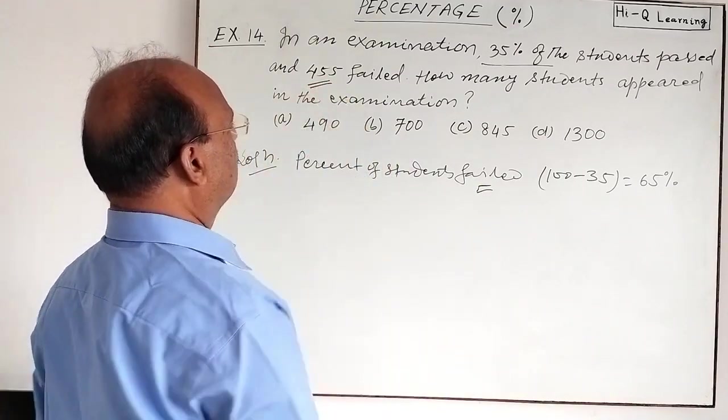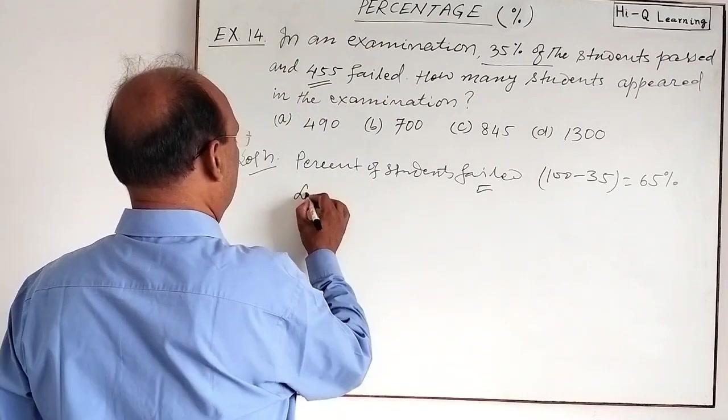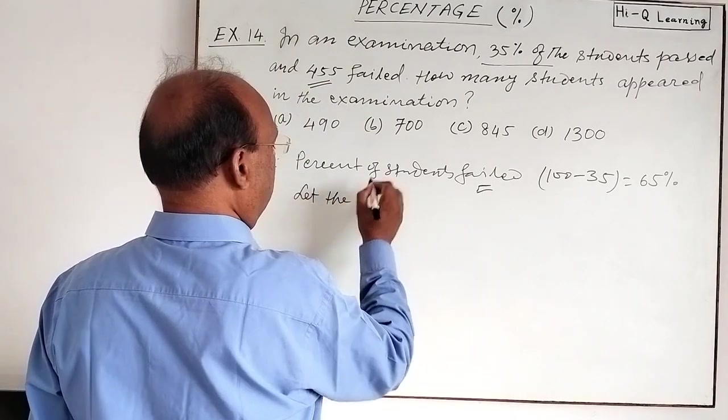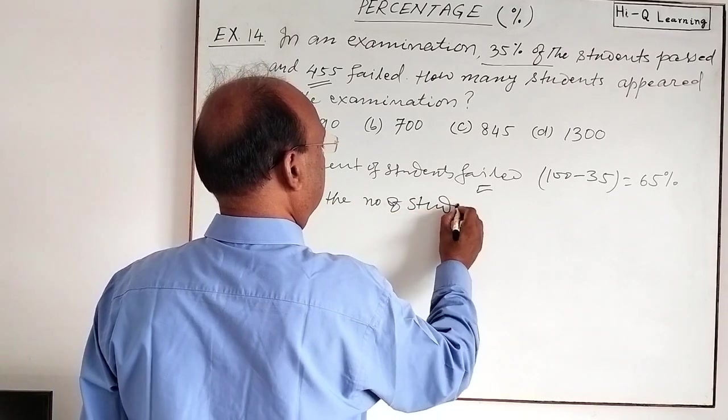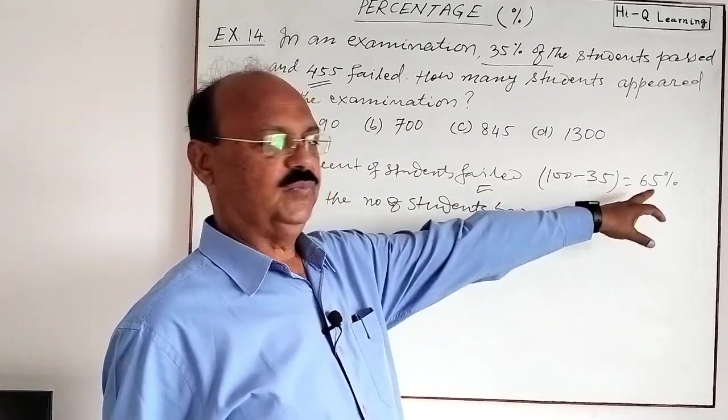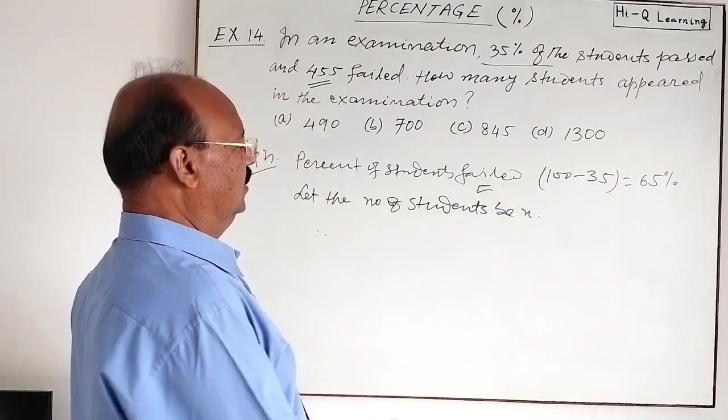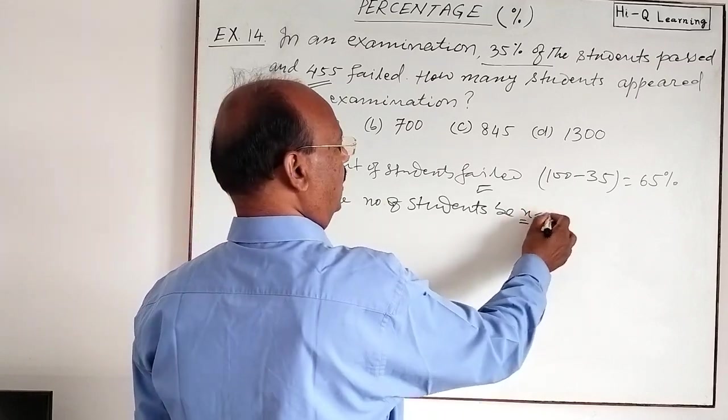Let us suppose the total number of students is X. The number of students who failed is 65 percent of the total number of students. We have to find out X.